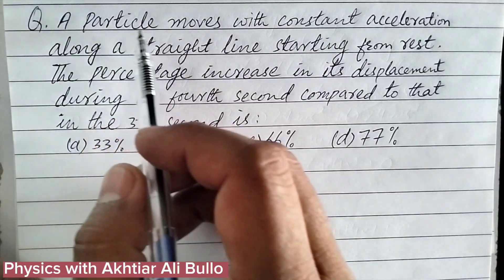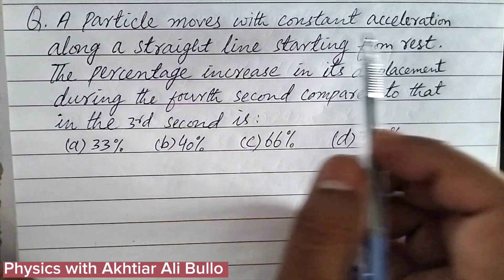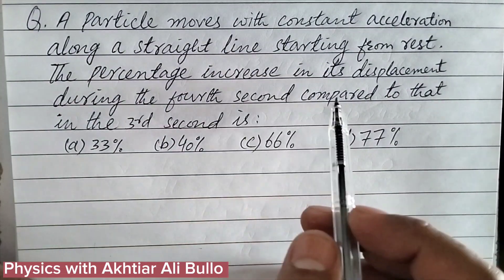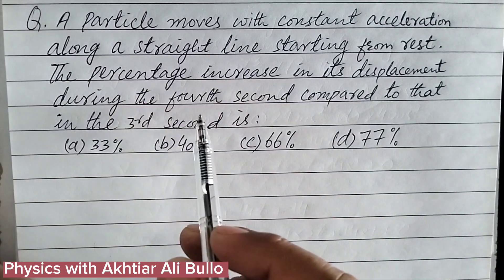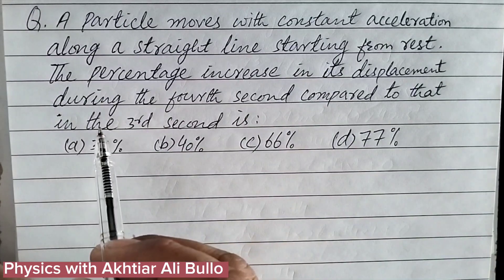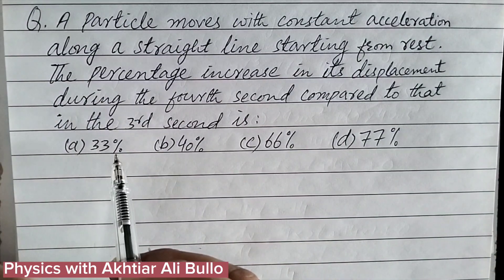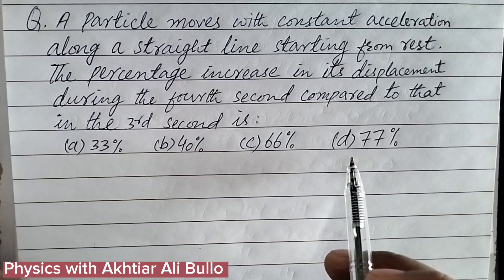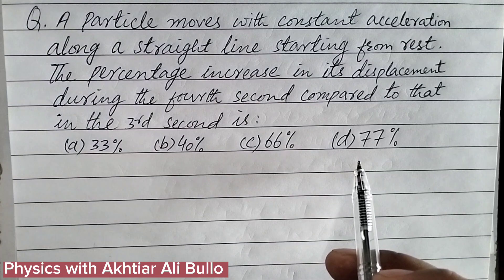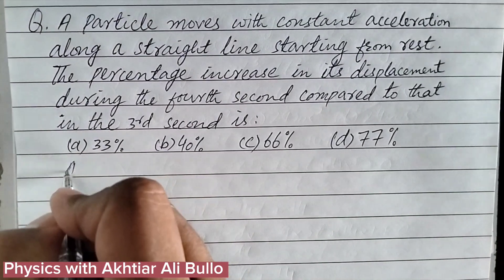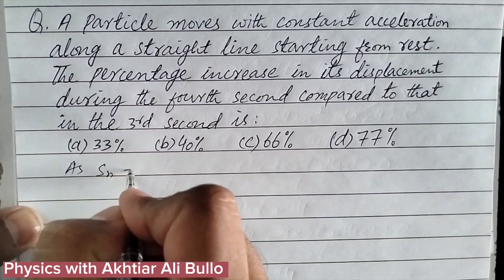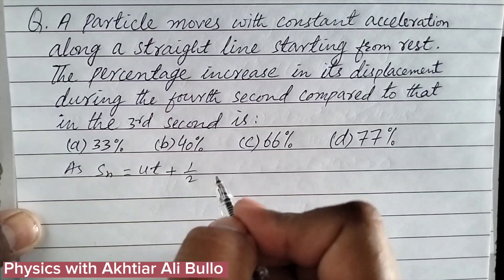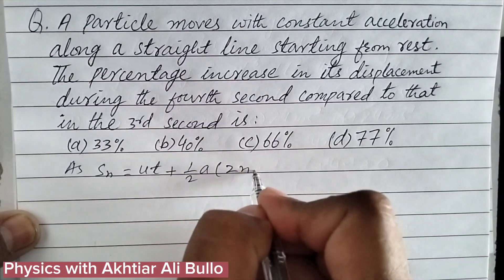The question is: a particle moves with constant acceleration along a straight line starting from rest. The percentage increase in its displacement during the fourth second compared to that in the third second is: a) 33%, b) 40%, c) 66%, d) 77%. The displacement in the nth second is calculated using the formula: s_n = ut + (1/2)a(2n - 1).